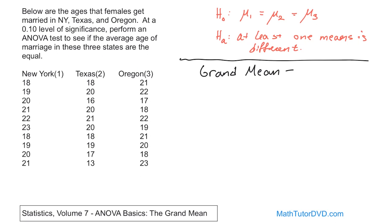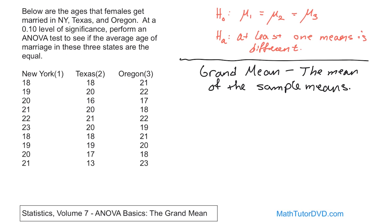Basically, you take the mean of each of the sample data sets. You get a sample mean from New York, a sample mean from Texas, and a sample mean from Oregon. If you average all three of those means together, you get what we call the grand mean. It is the mean of the sample means. Your book will say that, and a lot of people ask what it means — I'm telling you: you average up each group's data to get a sample mean, then you average those sample means together. That's the grand mean — we need it as a common baseline.